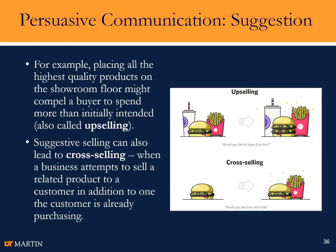Placing the highest quality products on the showroom floor would compel a buyer to spend more than they would initially want to spend. You never go to a car dealership and find the worst models — you find the top-of-the-line models. Upselling, like asking someone if they'd like to supersize their order, gets them to spend a little more. Cross-selling is when you attempt to sell a related product — like suggesting fries to go with a burger — because they've already associated them together.